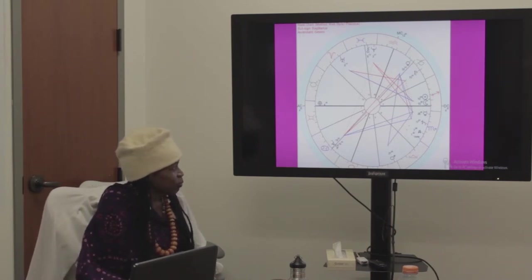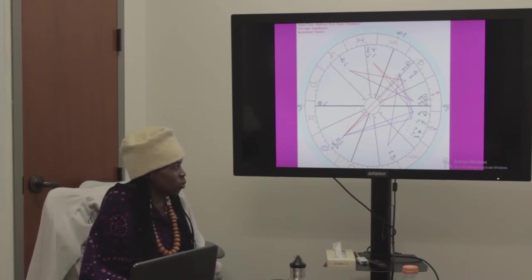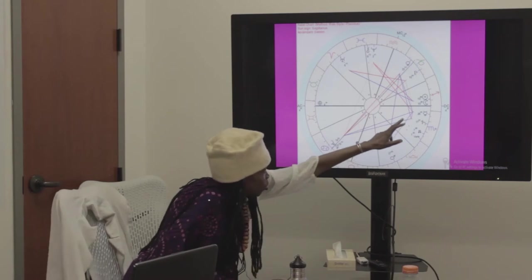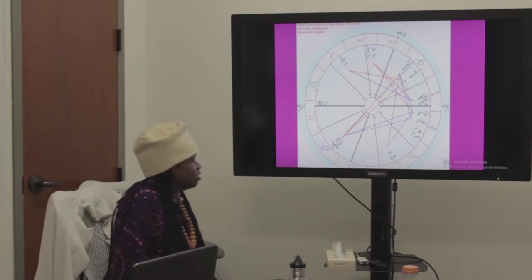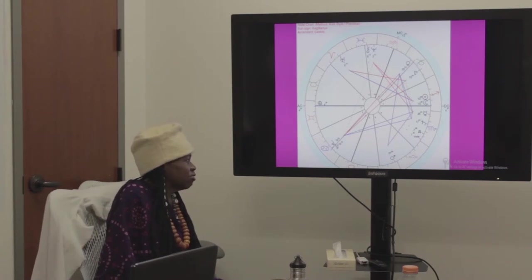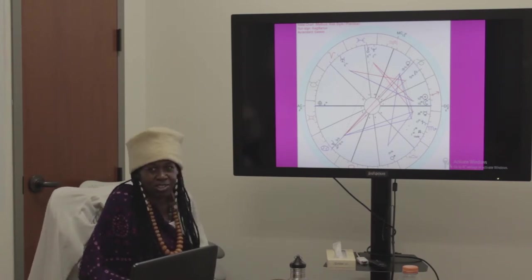Mercury's in Scorpio. Saturn's in Scorpio. The north node is in Scorpio. We got a lot of Scorpio energy going on, even though the sun and the moon are in Sagittarius.